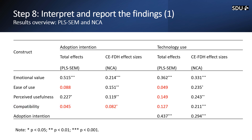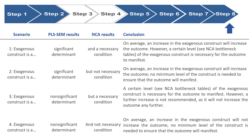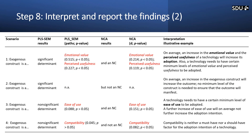We can do the same interpretation for technology use. Now, how do we combine this with the chart we just talked about? Scenario number one: when X is both a significant determinant and a necessary condition — for example, emotional value and perceived usefulness — we can say that on average, an increase in emotional value and perceived usefulness of a technology will increase its adoption. Also, the technology needs to have a certain minimum level of emotional value and perceived usefulness to be adopted.